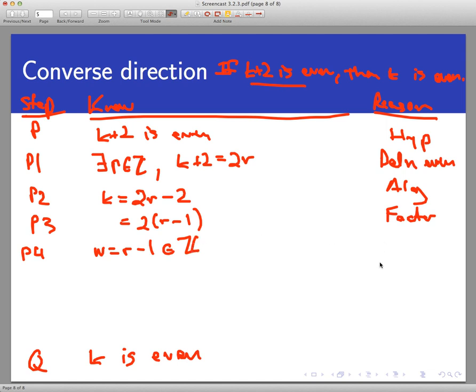And so now what I've done is I've written k equal to 2 times w, where w is an integer by setting w equal to r minus 1. And that gets me to the end. k is now even by definition.